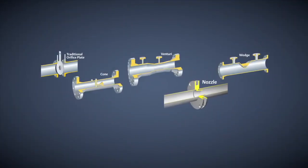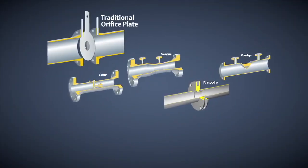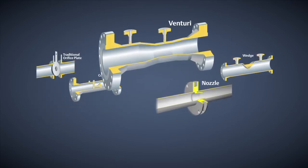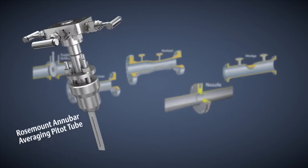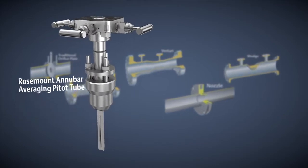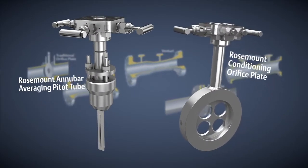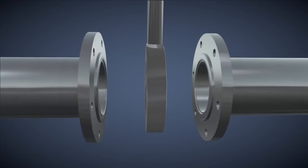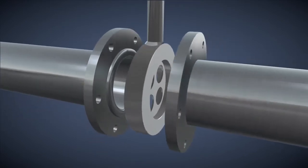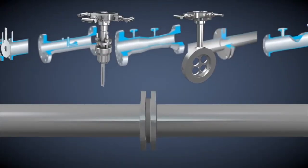There are many types of primary elements including traditional orifice plate, cone, venturi, nozzle, wedge, Rosemount Annubar averaging pitot tube, and Rosemount conditioning orifice plate. Primary element selection is dependent on process conditions.